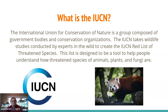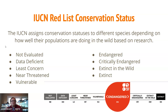Basically, when you look up an animal, plant, or fungi species on the list, you're able to figure out how in danger that animal is of going extinct. Do I need to call somebody in my government offices to try and encourage them to help protect this animal? That's the idea behind this list. The IUCN assigns conservation statuses to different species depending on how well their populations are doing in the wild based on research.